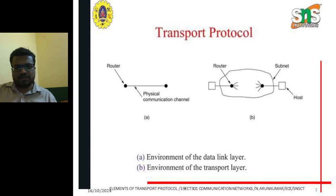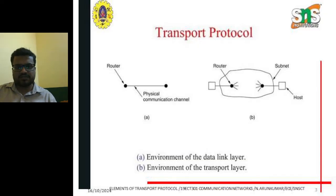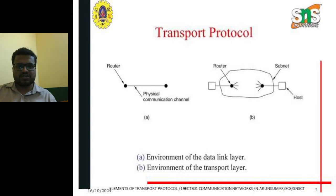There are two types of layers discussed here: the environment of the data link layer and the environment of the transport layer. Based on these two layers we can transfer information. The data is first fetched from the data link layer and then forwarded to the transport layer based on routing techniques. The router is the device used to connect and forward information to the next medium or device.